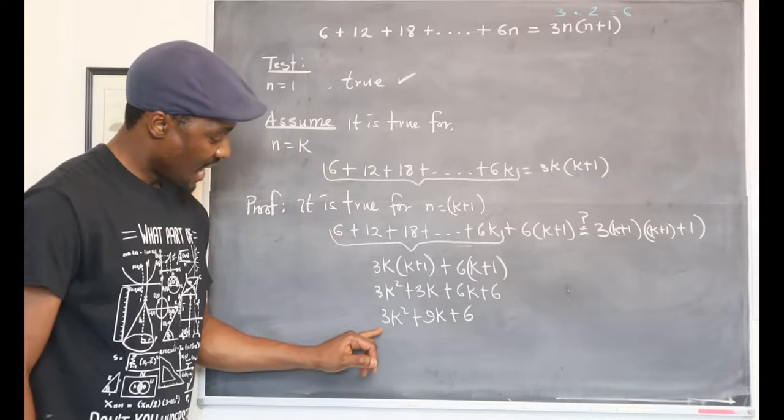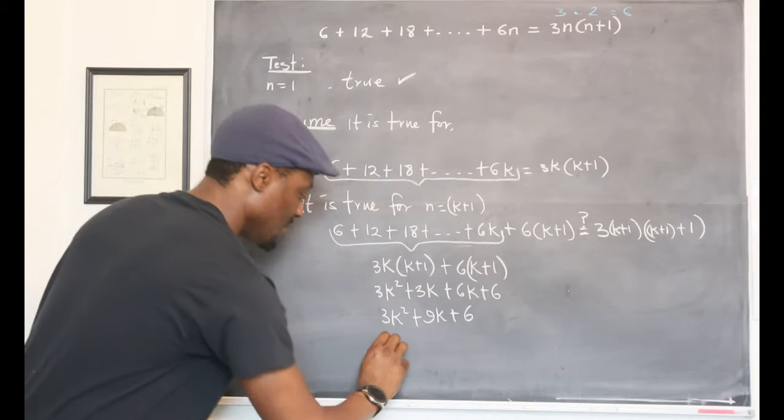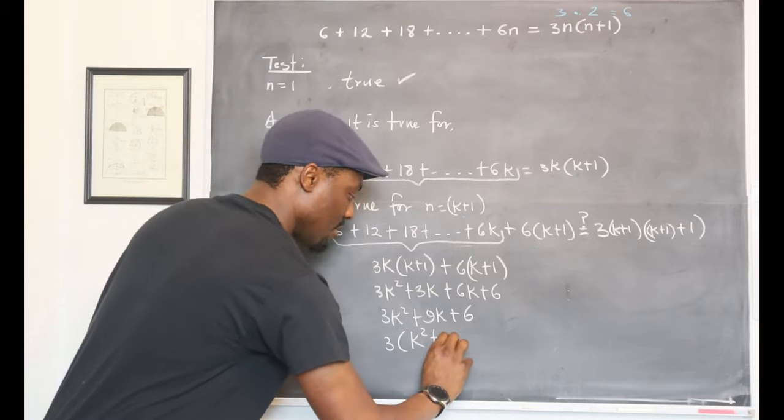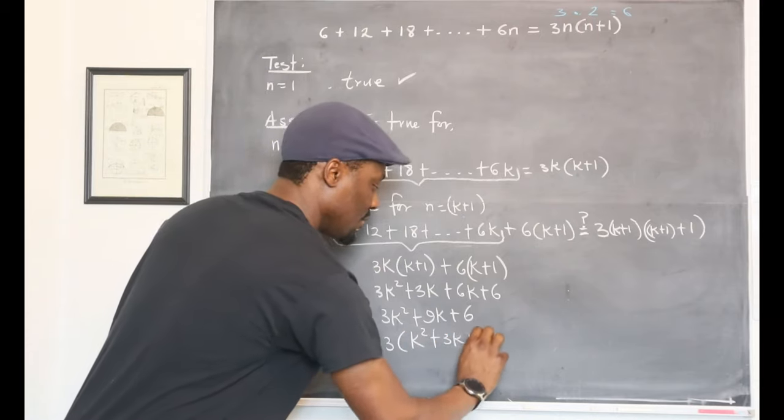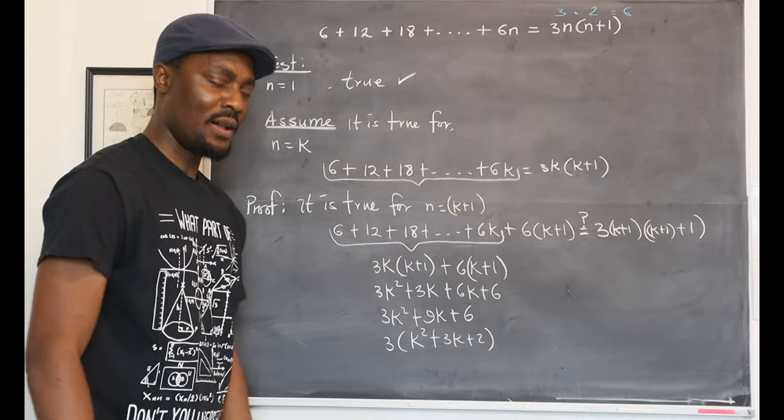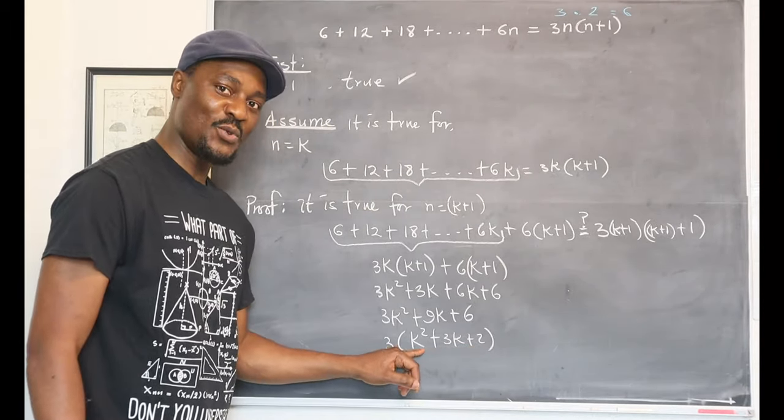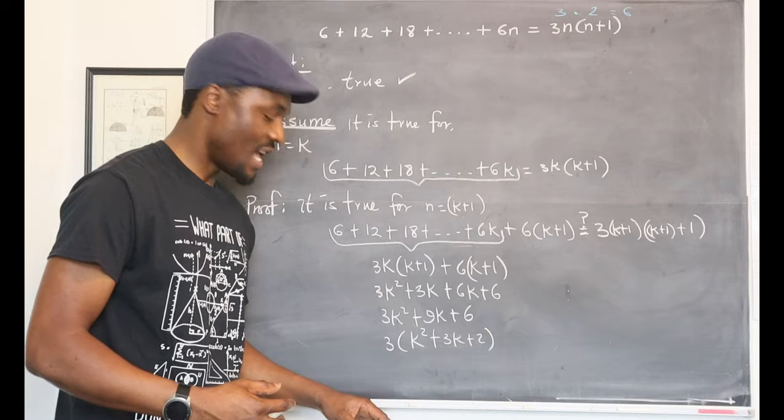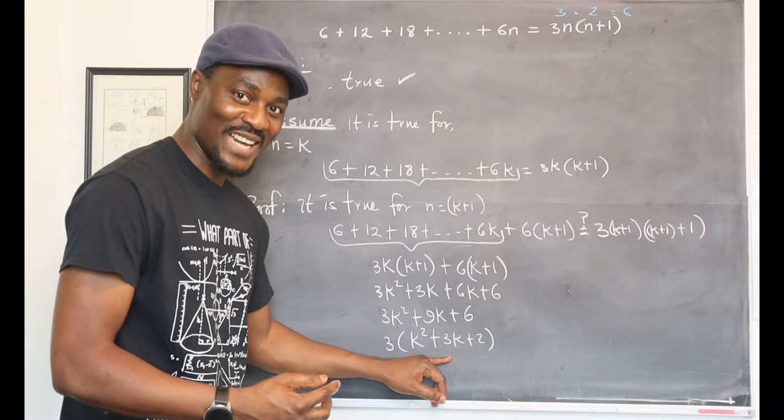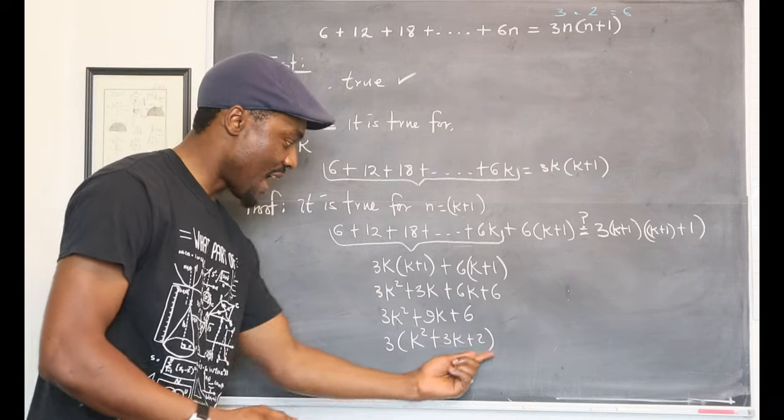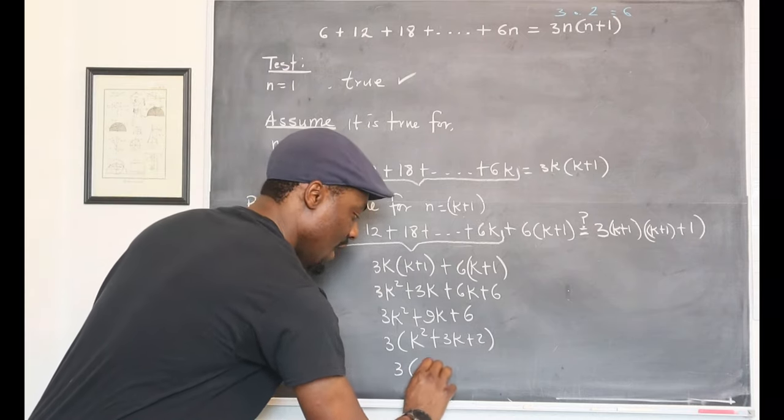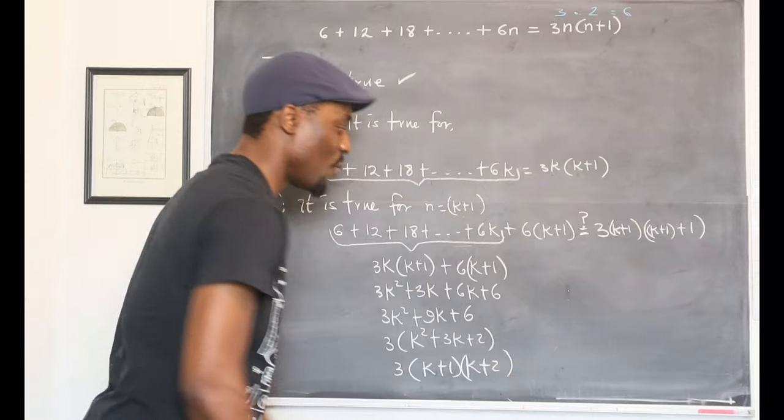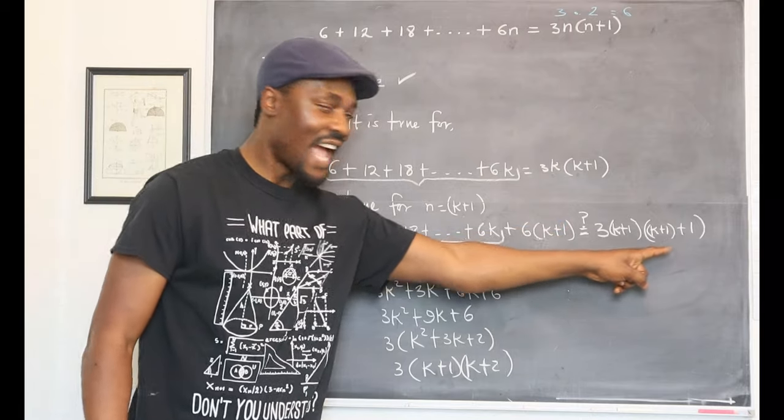You know what? I can take out the 3, into k squared plus 3k plus 2. Well, if you remember your rules of factoring, this is a quadratic expression. Can you factor this? Yes. If we factor this, I'm not ready to teach you that in this video, but you should know that. If you factor this, you're going to end up with 3 into k plus 1 times k plus 2, which looks like this.